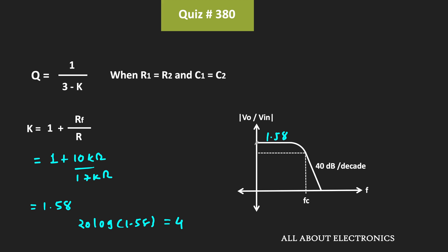Now, if we put the value of K in this expression, the value of Q comes out as 0.707. Since the value of Q equals 0.707, or 1 by root 2,